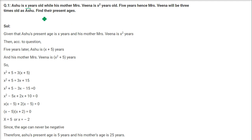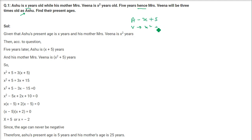So, what we do here is that Ashu's age is X years — it is already given. And mother's age is X square. Now the question says 5 years hence — hence means after, later, addition. So, 5 years later, Mrs. Veena will be 3 times as old as Ashu. We add 5 years to both of them. The age of Veena after 5 years is X square plus 5, and it is going to be 3 times that of Ashu.